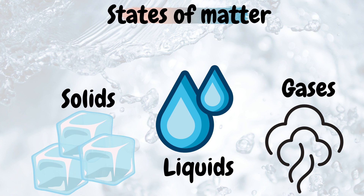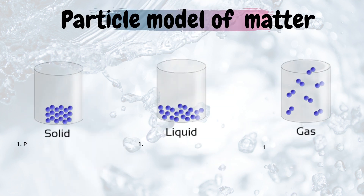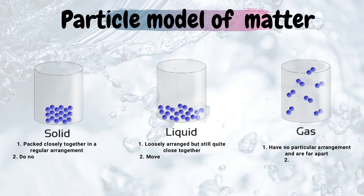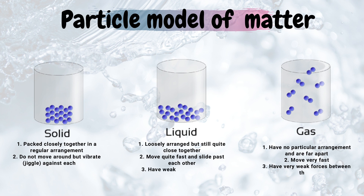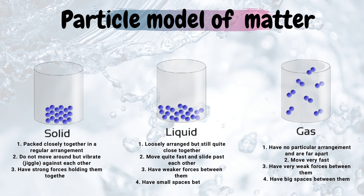All matter can be grouped into three phases or three states: liquids, solids, and gases. Now, the particles in all three phases are arranged differently and they have different characteristics. For instance, in solids the particles are packed closely together and they have a regular arrangement, which gives solid matter a defined shape.